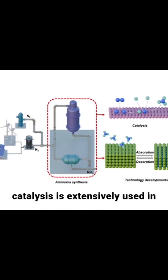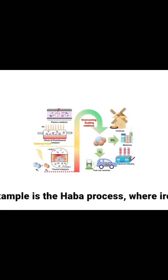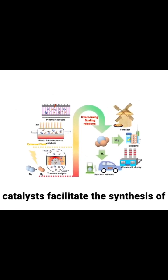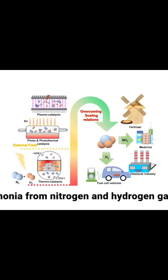Heterogeneous catalysis is extensively used in industrial processes. A classic example is the Haber process, where iron catalysts facilitate the synthesis of ammonia from nitrogen and hydrogen gases.